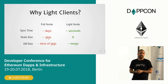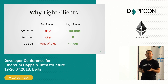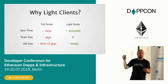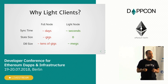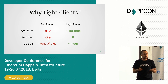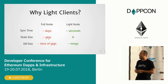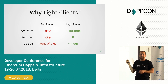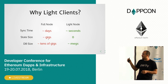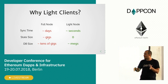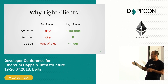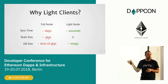So, why light clients? As the guy who was introducing me mentioned already, syncing a full node is really hard these days. Sync time currently is measured in days — not hours, as it used to be like a year or a year and a half ago. The state size is gigabytes, and the entire database, which contains states after every block and also the blockchain data, is actually tens of gigabytes right now, if pruned.